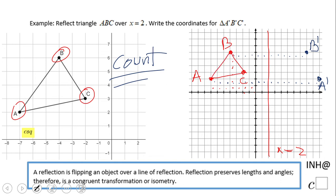get the reflection. We count: 1, 2, 3, 4... 1, 2, 3, 4. This is point C prime. Look here folks, we have the reflection of triangle ABC over the line x equals 2. And now